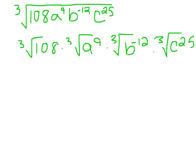We're also going to do the same for our coefficients and variables. So we can break down cube root of 108 into cube root of 27 times cube root of 4. And we can further break down our cube root of 27 to 3 times cube root of 4.